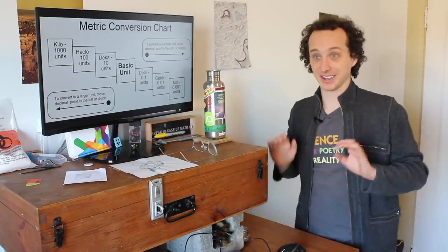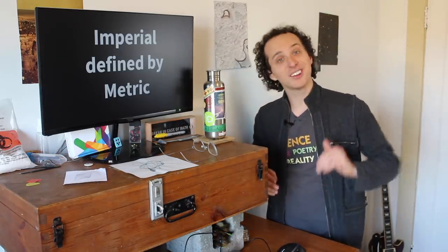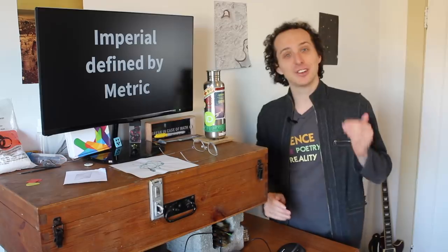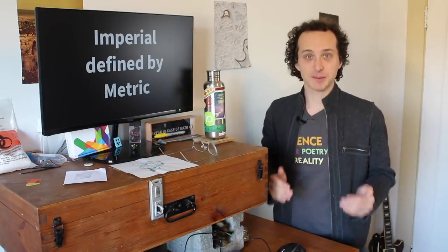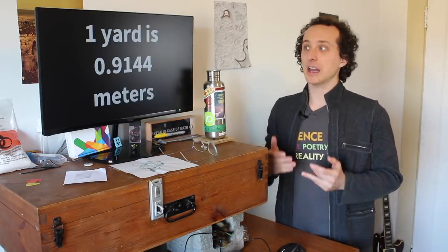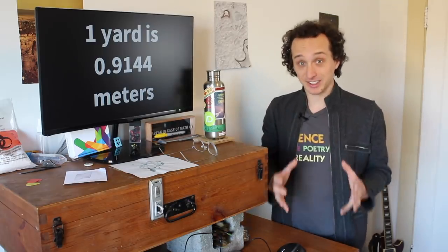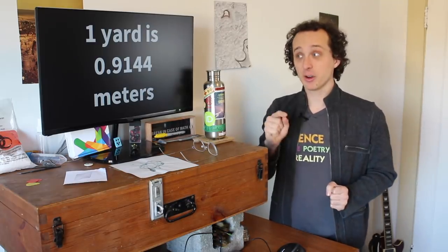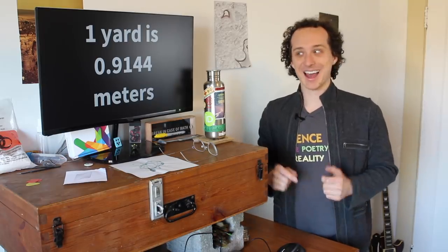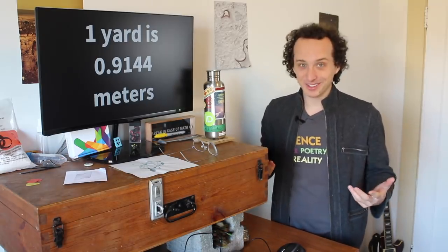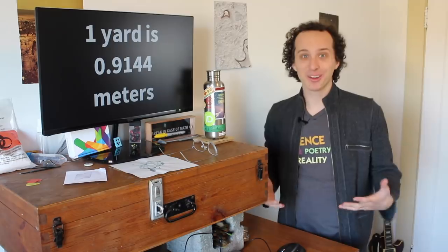And the crazy thing about imperial is that it is actually based on the metric system — it's defined by the metric system. So if you want to know how long a yard is, by definition it is 0.9144 meters. And it didn't always used to be this way, but this is now the case for the entire imperial system.